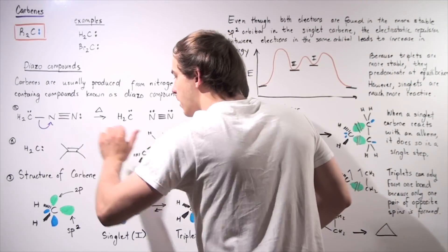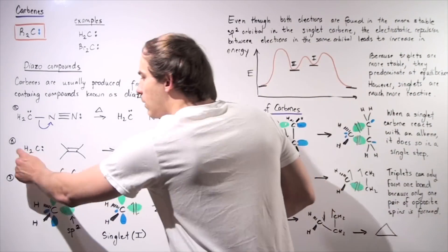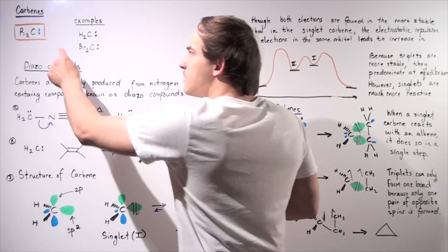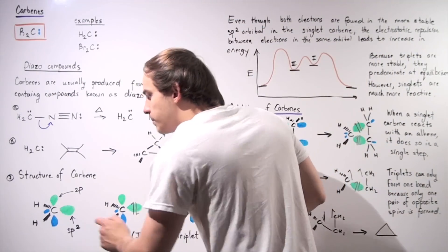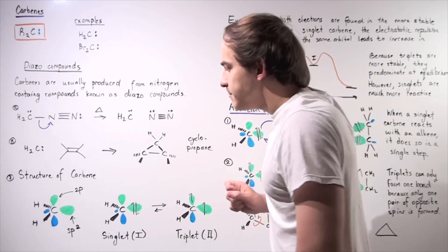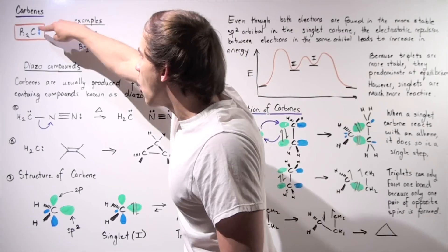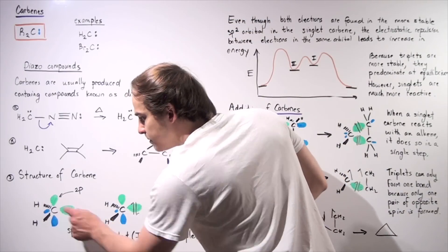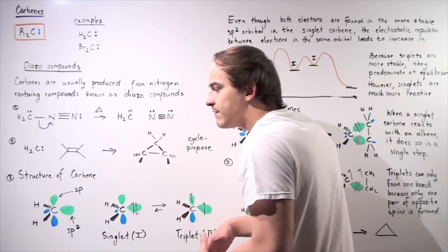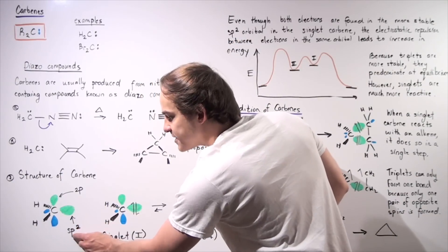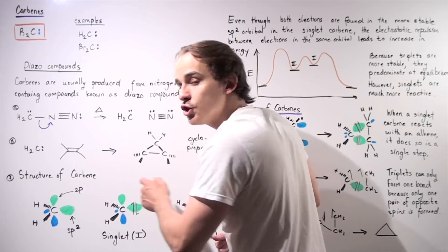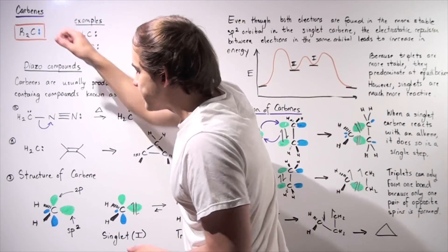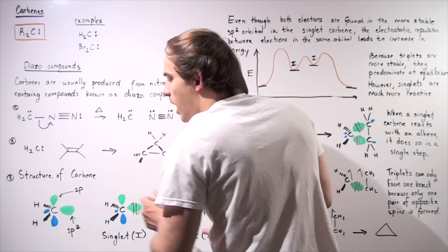Before we discuss the mechanism, let's discuss the structure of our carbene molecule using this specific example. The central carbon is sp2 hybridized. That means these C-H bonds between carbon and the alkyl groups are sp2 hybridized. We have two sp2 hybridized bonds and a third sp2 lobe shown here, plus a 2p orbital that is not hybridized. We have two electrons on the central carbon that we need to place in either one of these orbitals.